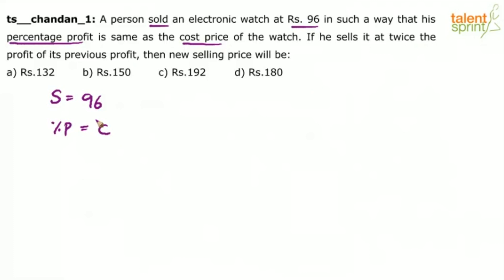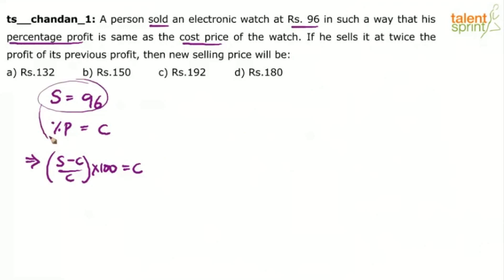You know how to calculate percentage profit: it's S minus C, divided by C, into 100. So we can say S minus C by C into 100 equals C. You already know the value of S is 96. Substitute 96 here, and this becomes an equation in terms of C.